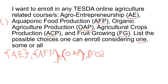Next is 'some' — meaning pairs. You could enroll in more than one online course since they don't conflict in schedule. For example, you could pair Agriculture Entrepreneurship (AE) with Aquaponic Food Production (AFP). Then AE paired with Organic Agriculture Production (OAP).